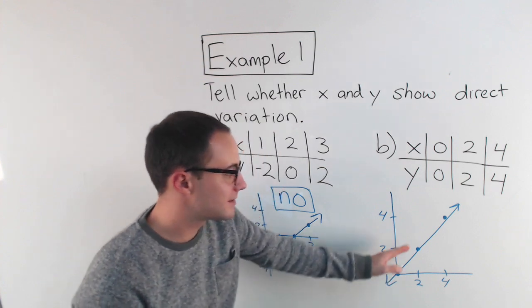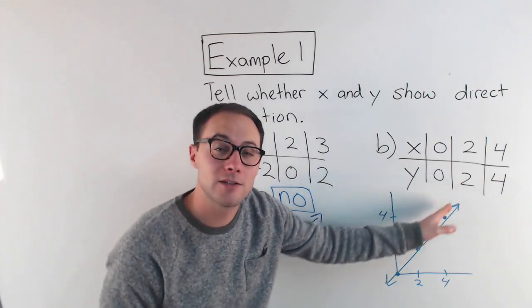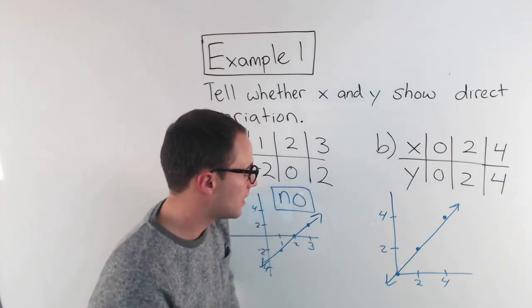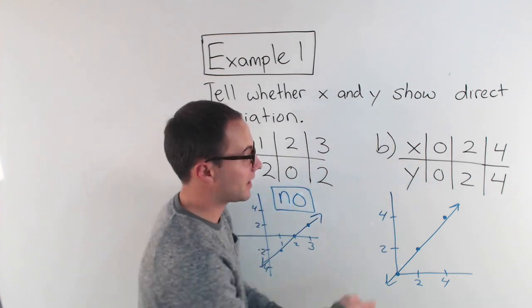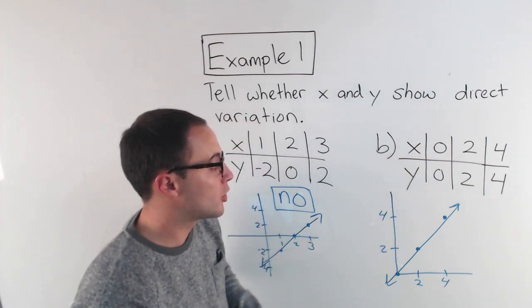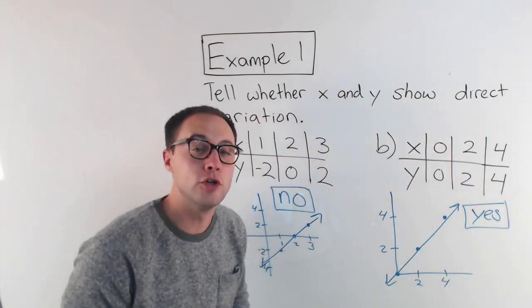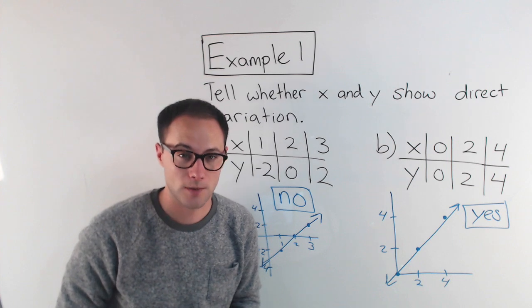But again, notice, this time, my line does go through the origin. And I can see right here, there's the origin right there anyway. So really, I didn't even need to graph it. I could have noticed that. So yes, in this situation, x and y do show direct variation.